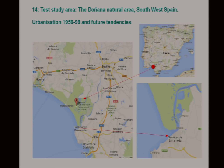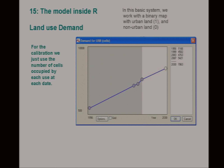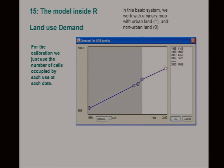The model I've built is based in this area — south-west Spain, a natural area called Doñana. I'm going to show some examples of my land use simulations for the growth of this large town called San Lúcar de Barrameda. Land use demand: you need to know how much land is changing. I'm only talking about urban land, so this is a binary map — urban land is 1, non-urban is 0. Our land use demand in the calibration map is simply how much land we know changed to urban in 1999: 4,502 cells.